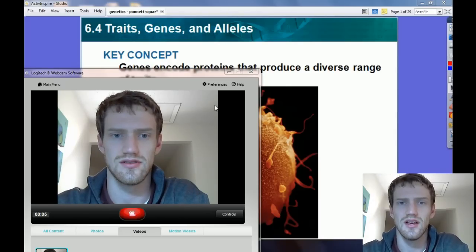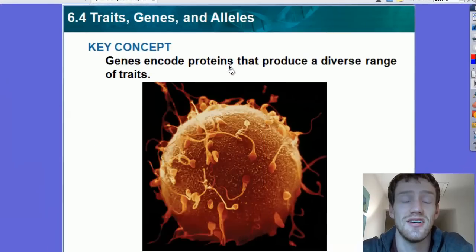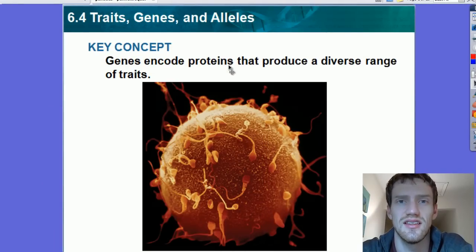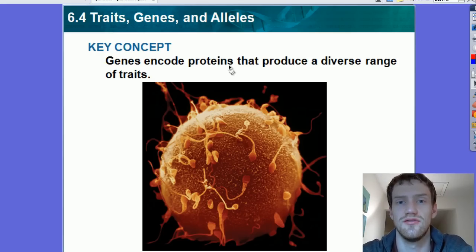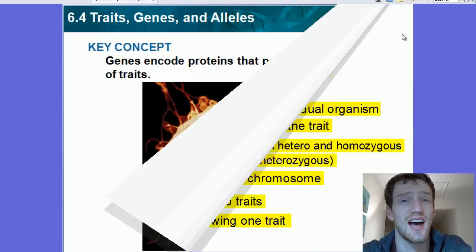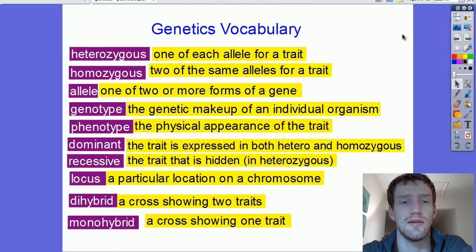Okay, let's go ahead and begin. This is a tutorial over section 6.4 which covers traits, genes, and alleles. In order to understand these concepts, we have about nine specific vocabulary terms that you need to learn for this section.